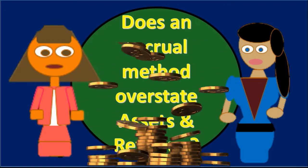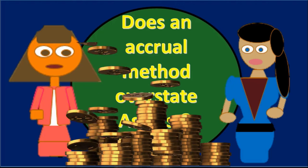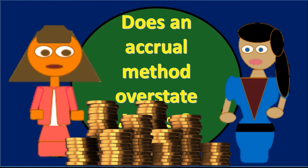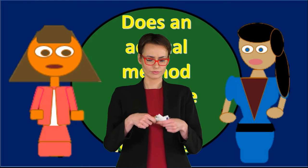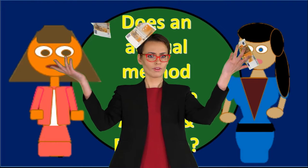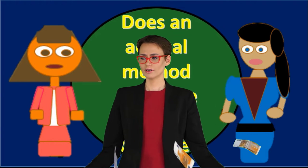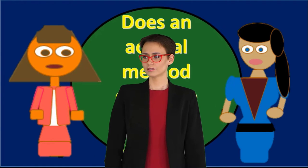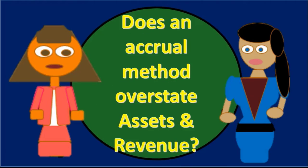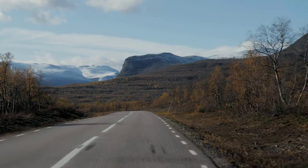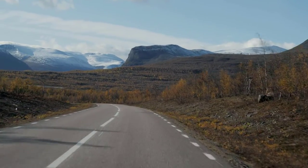Under the cash method, it's much more simple: we record revenue when we receive cash and record expenses when we pay cash. That simplicity is one of the major advantages of the cash method. However, it is often thought that a cash method can be more accurate in some ways — for example, not recognizing revenue until we actually get the cash. And that's often the concern.